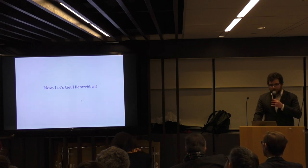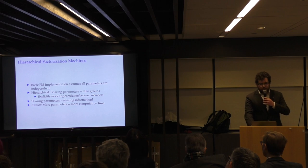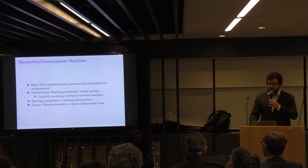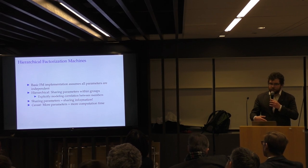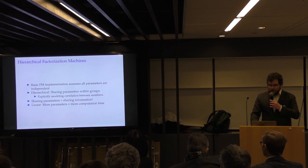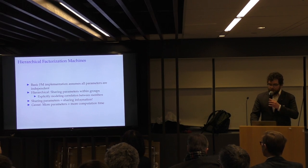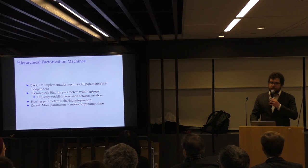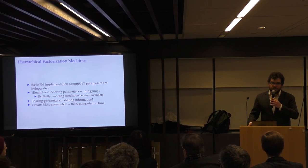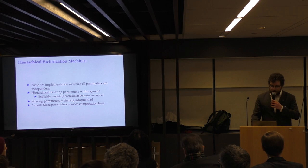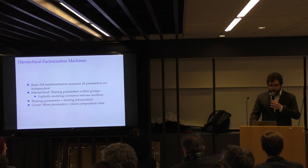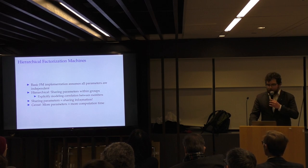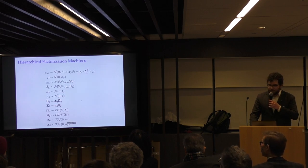Now, we're going to get hierarchical. So, our basic factorization machine assumed all of our parameters were independent. They were all distributed normally with a mean of 0 and a standard deviation of 1, and they were uncorrelated. Hierarchical models let you share parameters within groups, and you explicitly model the correlation between members. So, for example, going back to my country year example, you can think of this model, the correlation between countries. And this is great, because sharing parameters means you're sharing information, with the caveat that more parameters means more computation time.